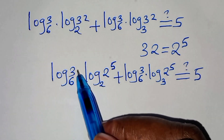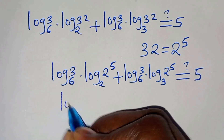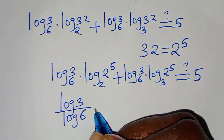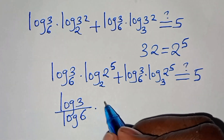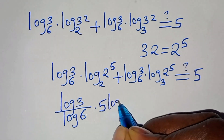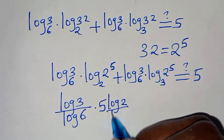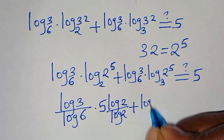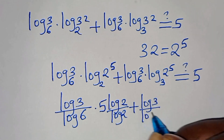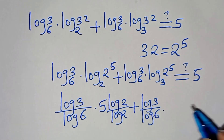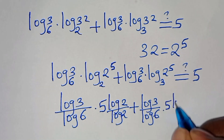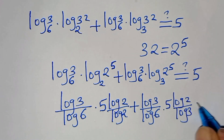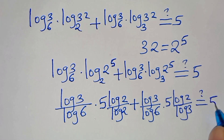Now log 2 and log 2 cancel in the first term, and log 3 and log 3 cancel in the second term. We're left with 5 times (log 3 / log 6) plus 5 times (log 2 / log 6), which should equal 5. Factoring out 5, we get 5 times (log 3 plus log 2) divided by log 6 equals 5.